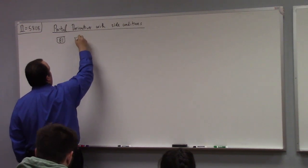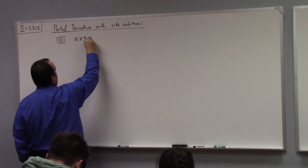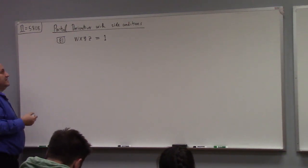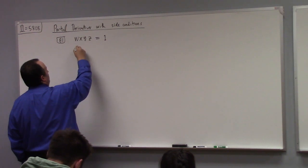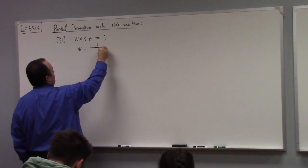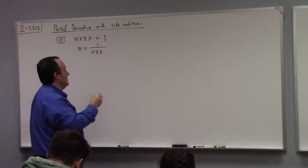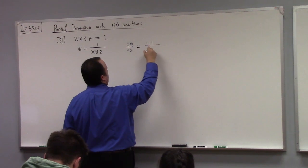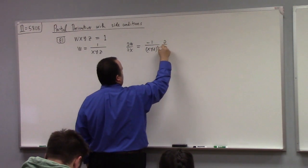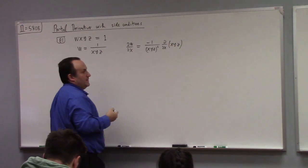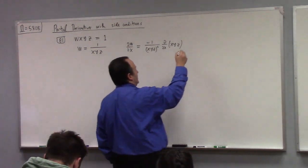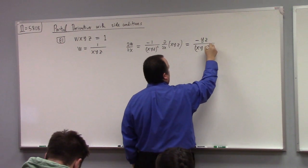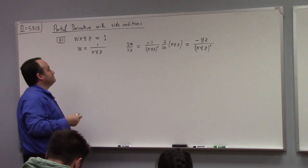I've got W·X·Y·Z equals 1. Then on the one hand, W is equal to 1 over XYZ, right? So partial W over partial X is minus 1 over (XYZ)² times partial/partial X of XYZ. What's partial/partial X of XYZ? YZ. So it looks like I've got minus YZ over (XYZ)². And of course you could simplify that, but I'll just leave it like that.